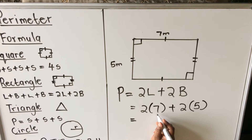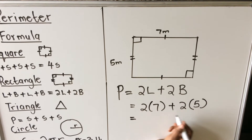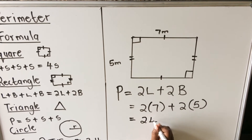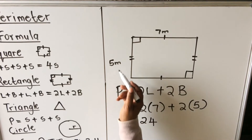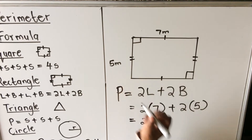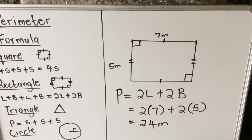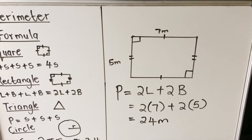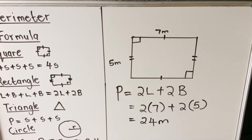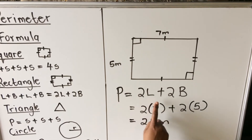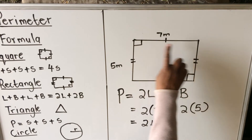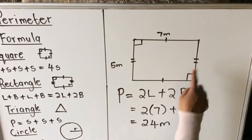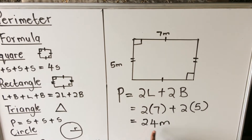Punching that into the calculator: two times seven is 14, plus two times five is 10, giving us 24. Don't forget to write the units. So the perimeter of this rectangle — the distance around it — is 24 units.